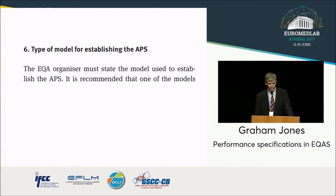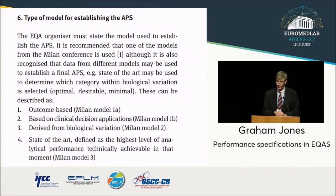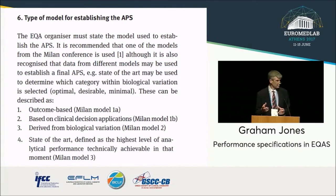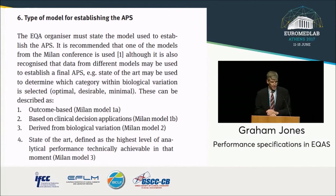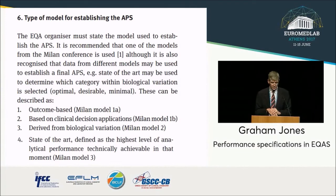The last element is the type of model for establishing the performance standard. The EQA organisation needs to state, for example, whether it's based on clinical outcomes — Model 1 — and what data has been used. If it's based on biological variation — Model 2 — where that comes from, whether it's based on precision and bias, and how they've been combined. If it's state-of-the-art, what outlier exclusions were undertaken and what samples were used to determine the Z-score. Unless you know that, you can't make the appropriate interpretation.